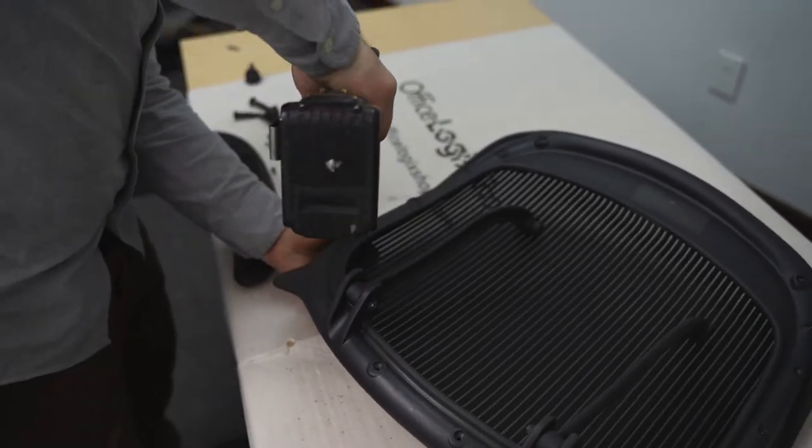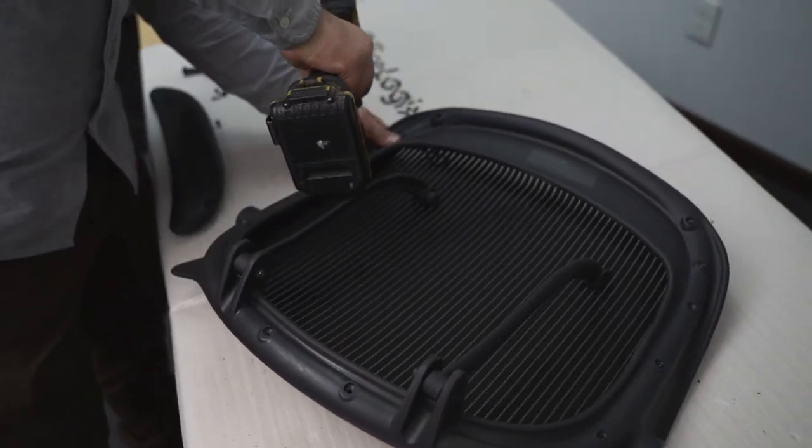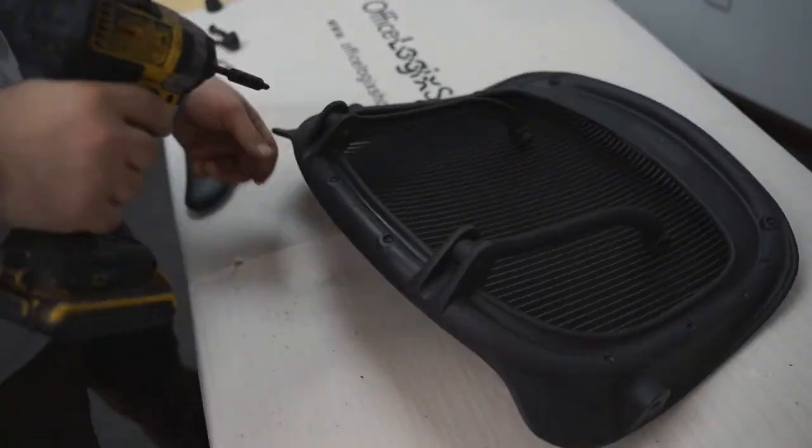As demonstrated, it is best to screw in on opposite sides first to help hold the seat mesh in place as you screw in the remaining screws.